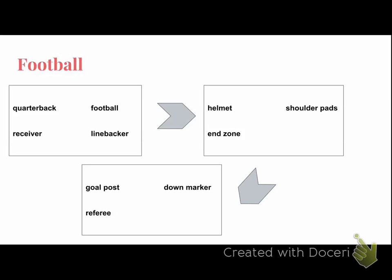You're always going to start out with four terms. Our terms here are quarterback, football, receiver, and linebacker. Your job is to figure out which word you're going to bump — hence bumper words — or get rid of from that group because it doesn't fit. What I mean by doesn't fit is it doesn't have a connection to the other words.